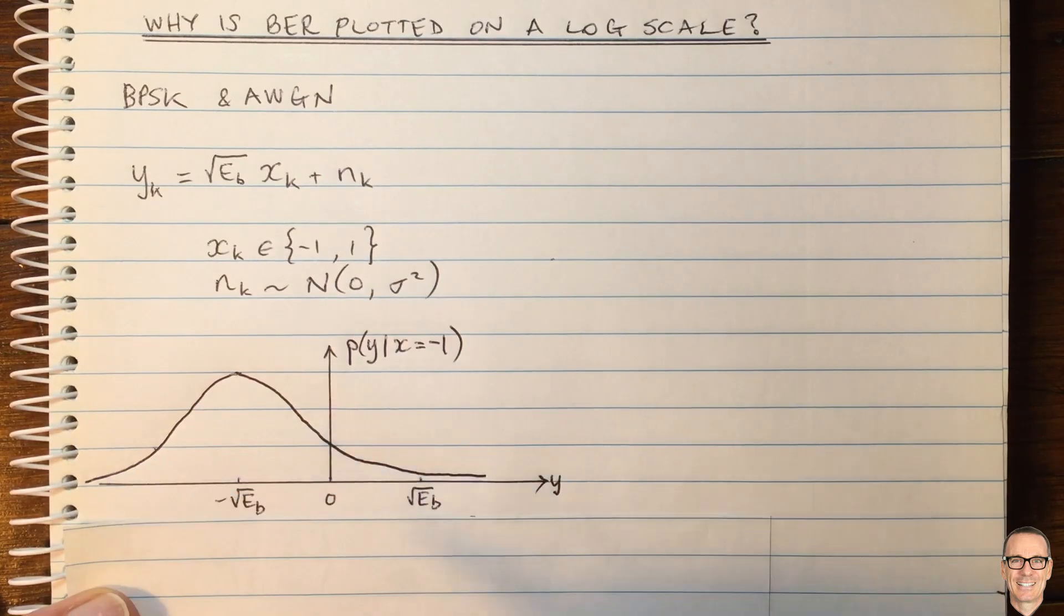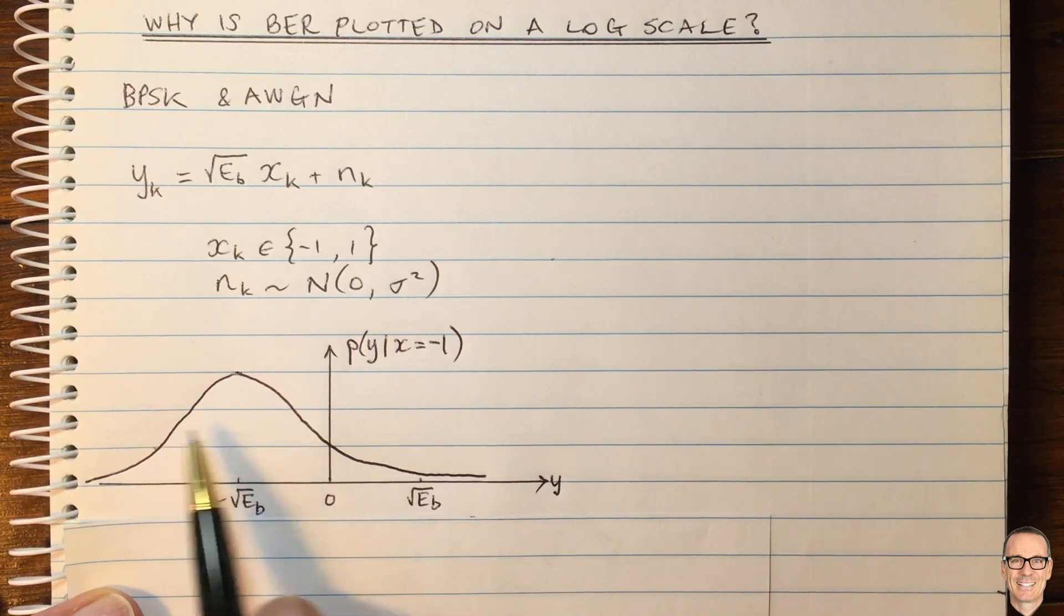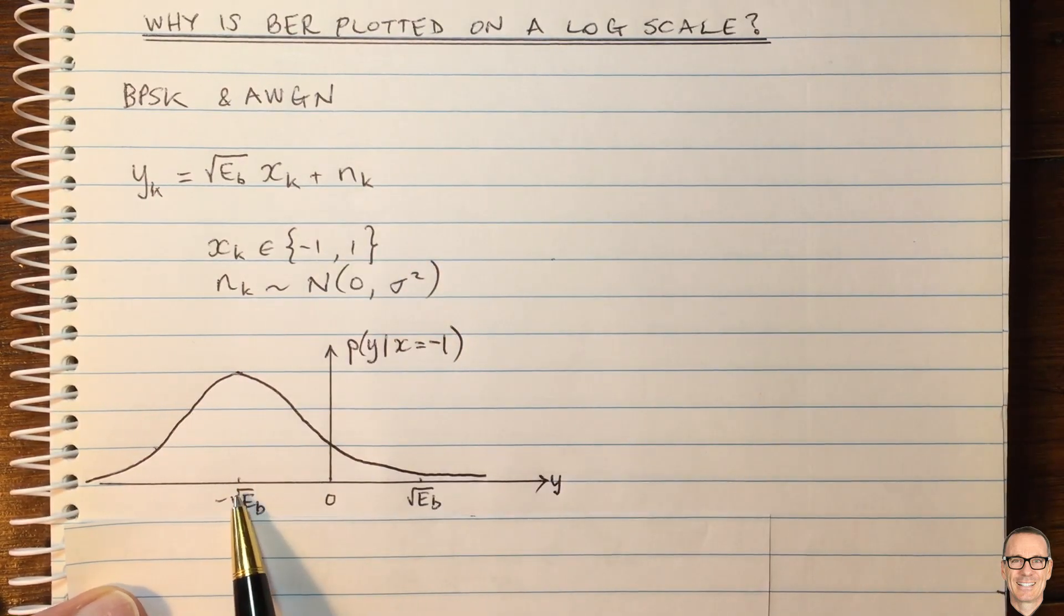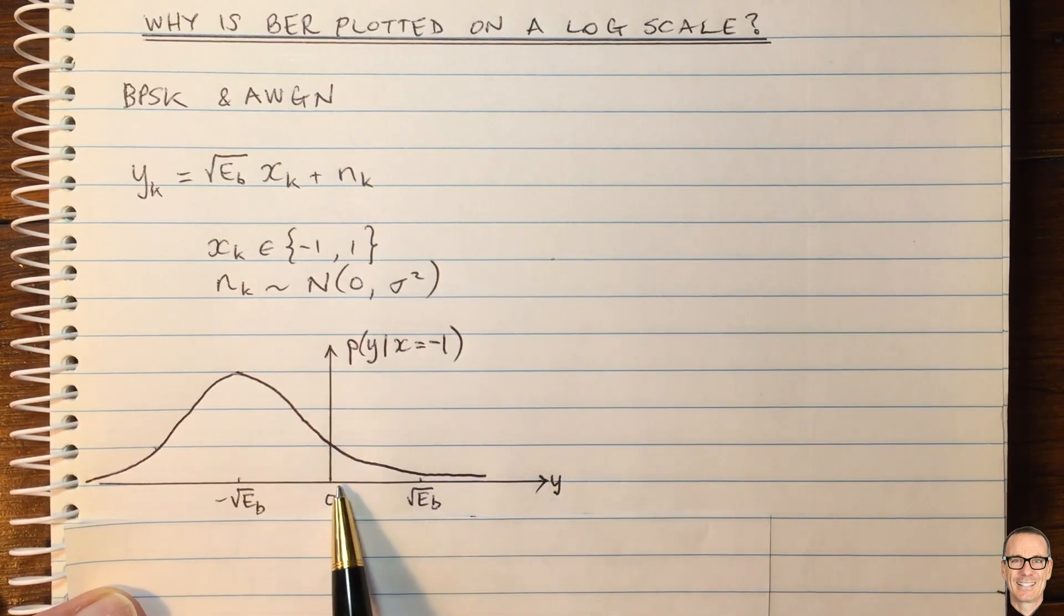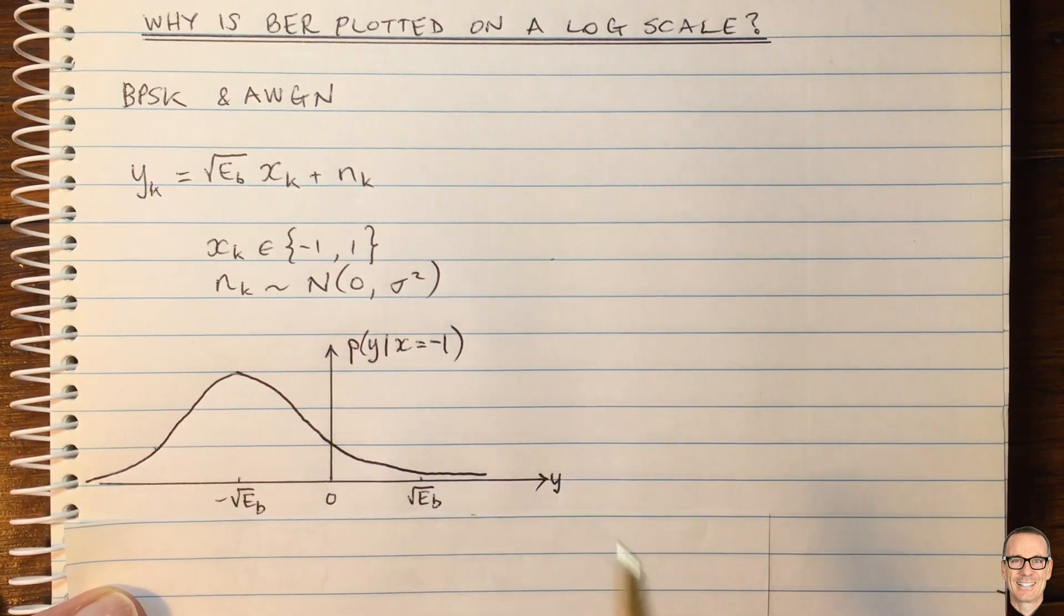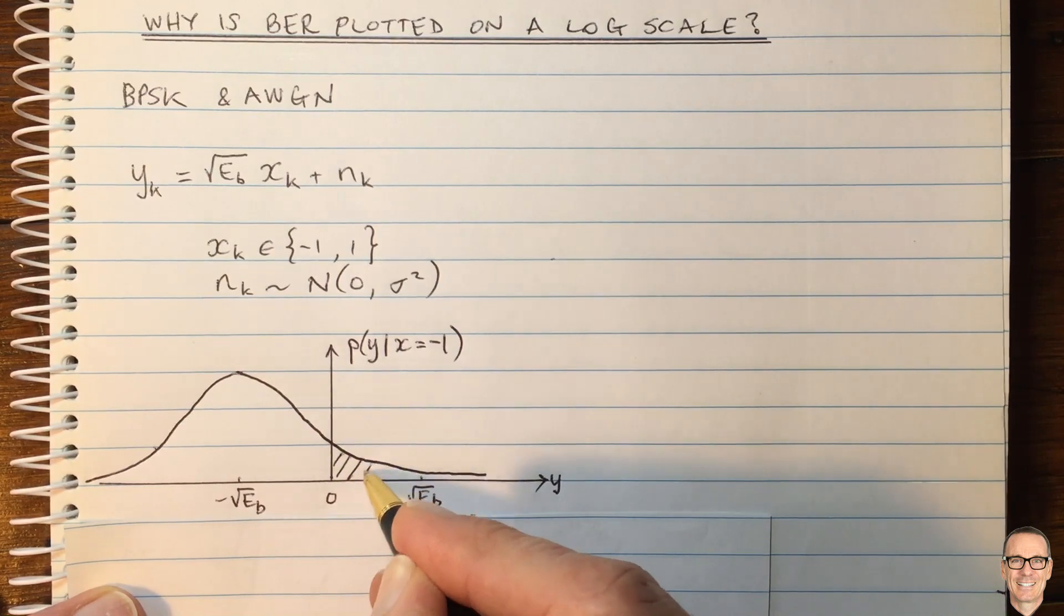Okay, so now let's think about how the errors happen. Well, if you've received a signal and it's a random value because it's random noise, then you're going to make an error if your signal comes as a positive value. So what's the probability that it comes as a positive value? It's the area under this curve.